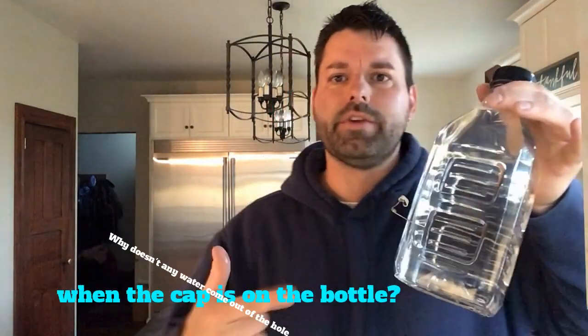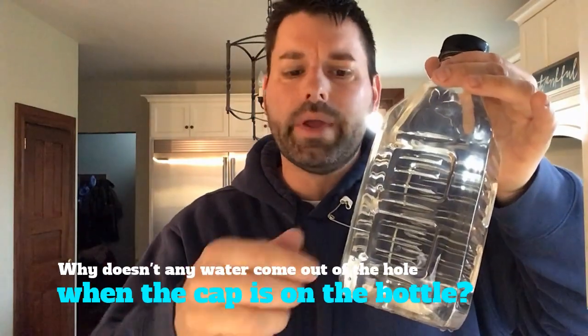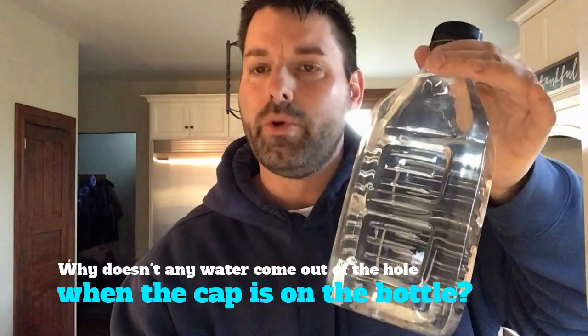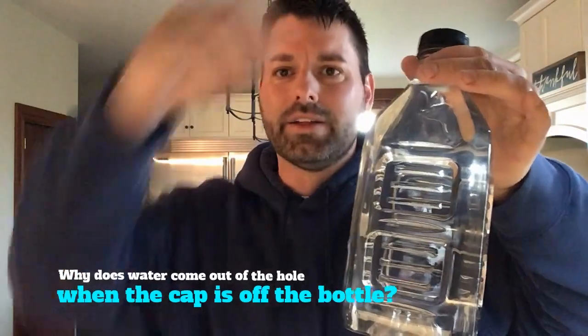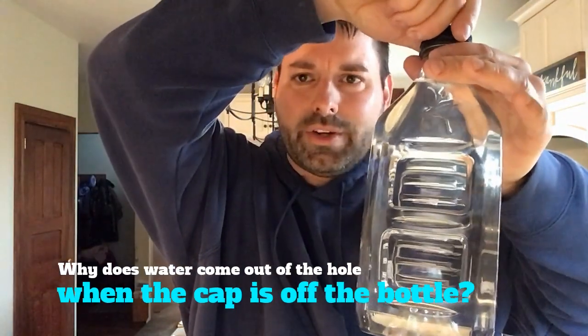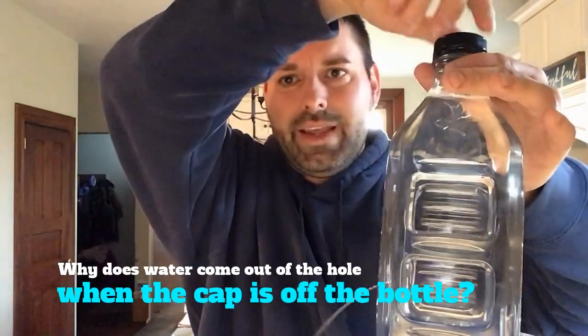Your scavenger hunt for the day is to figure out why water doesn't come flowing out of the bottle. When I pull the pin out, there's a hole in the bottle, but the cap's still on. I guess the other part of that scavenger hunt challenge is why does that bottle start to leak when I take the cap off the bottle?